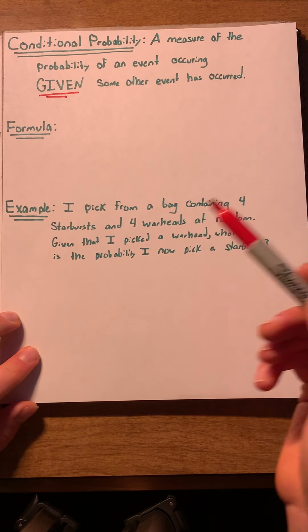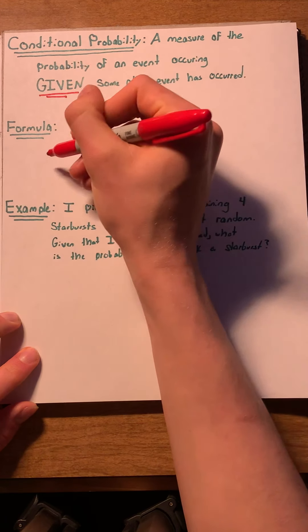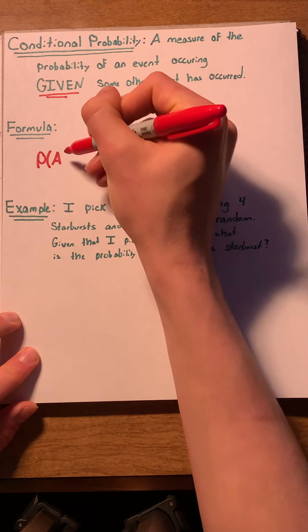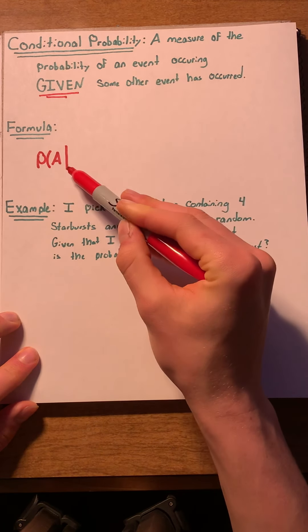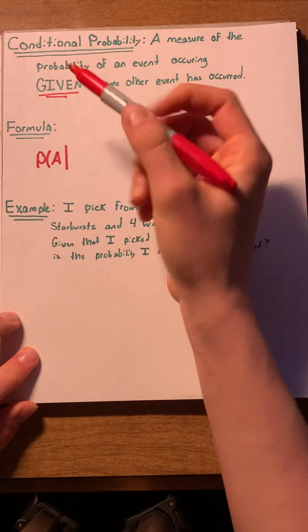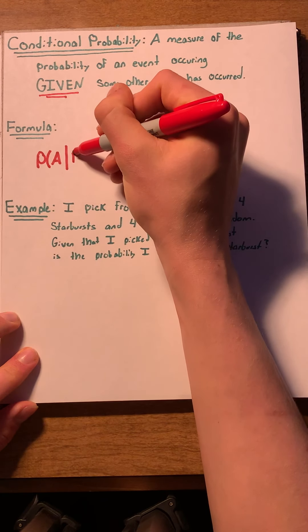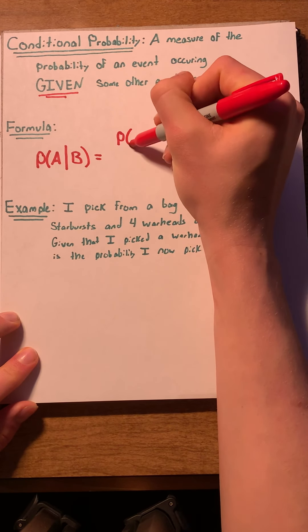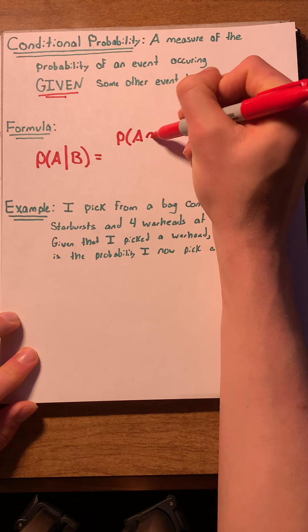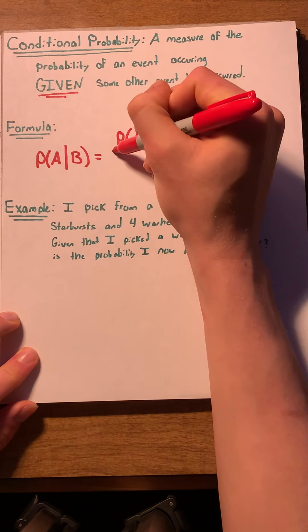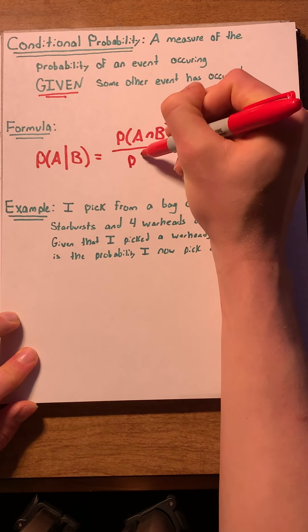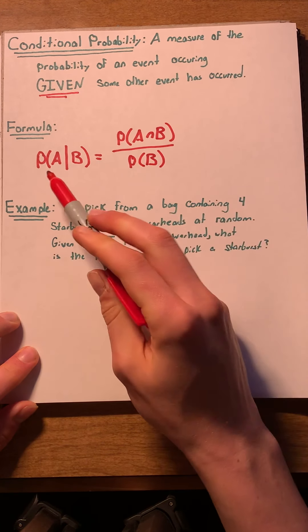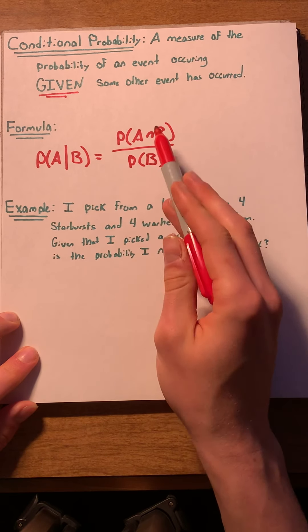We actually have a formula for conditional probability, which we'll write out now. The probability of event A occurring, given—this vertical sign here means given—event B has occurred, is equal to the probability of A intersect B, or A and B, over the probability of B. That's a pretty nice formula. It breaks down something that looks complicated into two things that we can easily solve.